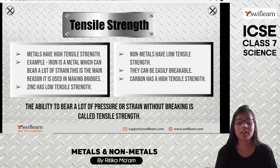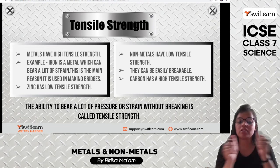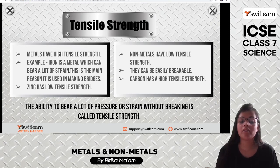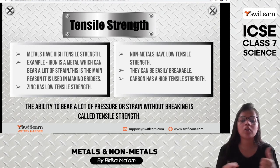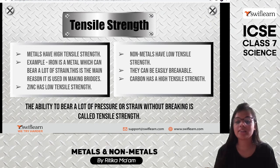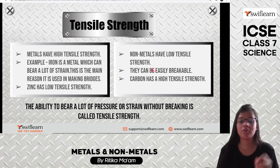Tensile strength is the ability to bear pressure without breaking — however much we pressurize or pull it, it doesn't break. Metals have very good tensile strength; for example, iron can take a lot of strain, which is why it is used in making bridges. Exception: zinc has very low tensile strength. Nonmetals normally have low tensile strength and break easily, but carbon is an exception with high tensile strength. These exceptions are very important to remember.